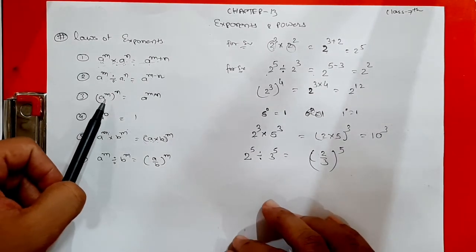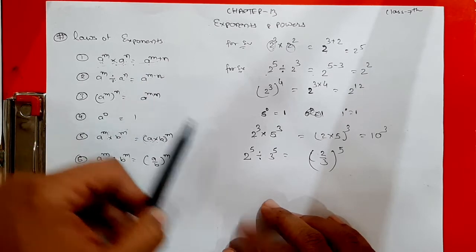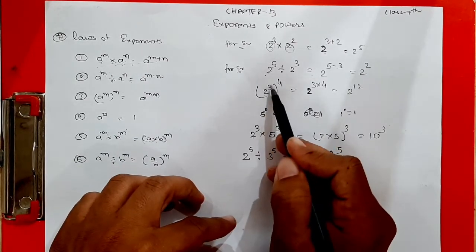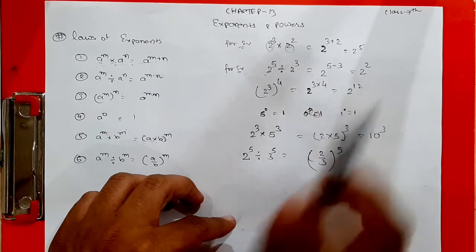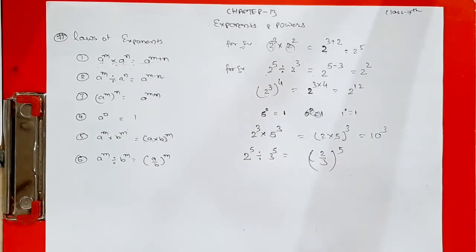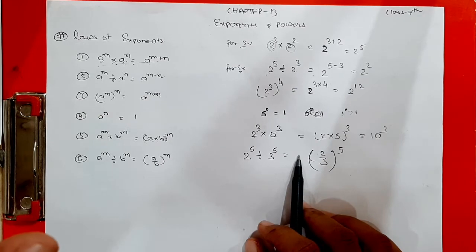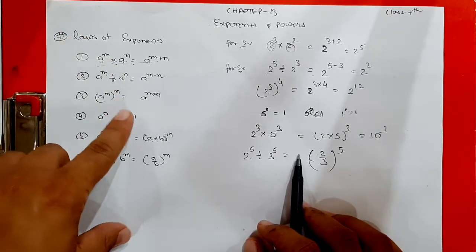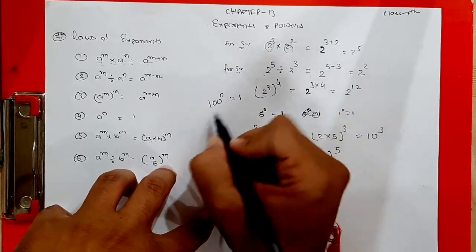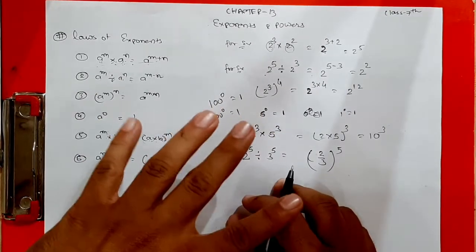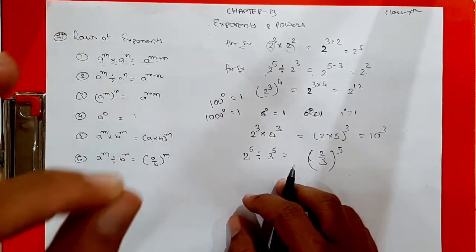Rule 3: if there is a power of a power, multiply the powers — for example 2 raised to 3 raised to 4 becomes 2 raised to 12. Rule 4: any number raised to 0 always equals 1 — whether it is 5 raised to 0, 100 raised to 0, or 1000 raised to 0, the answer is always 1.